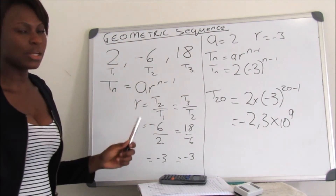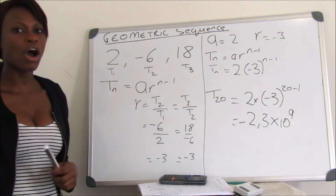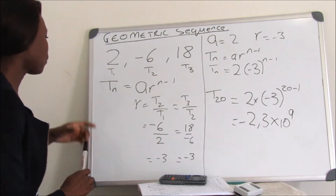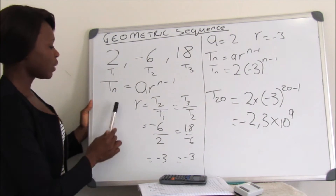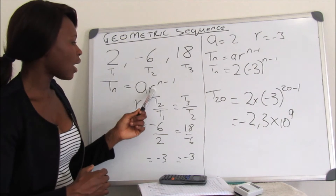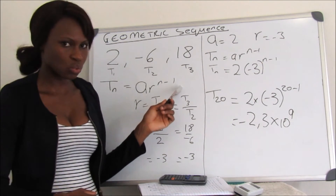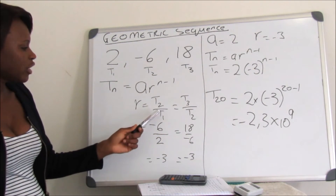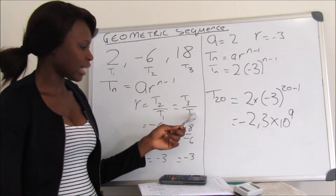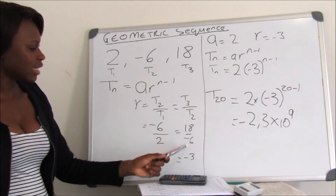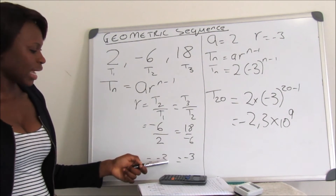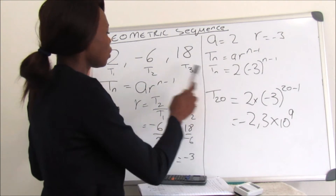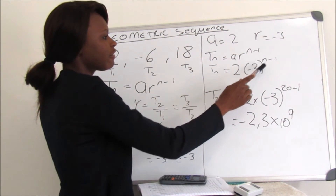Quick recap: we were given the sequence 2, negative 6, and 18 — three terms, T1, T2, and T3. The standard equation is Tn equals AR to the exponent of n minus 1. Our A equals 2. To find R we used T2 divided by T1 equals T3 divided by T2, giving negative 6 divided by 2 and 18 divided by negative 6, both giving negative 3. Substituting, our equation is 2 multiplied by negative 3 to the exponent of n minus 1. For T20, we substituted n equals 20 to get negative 2.3 times 10 to the power of 9.